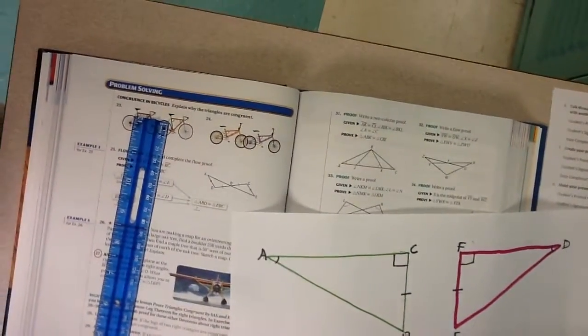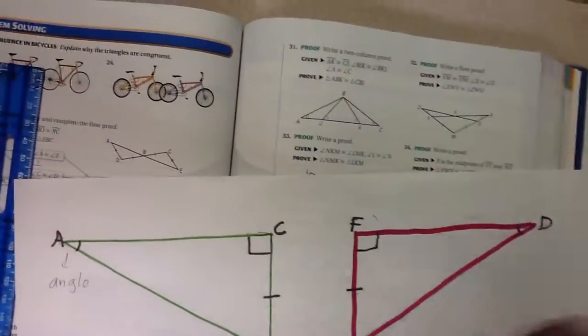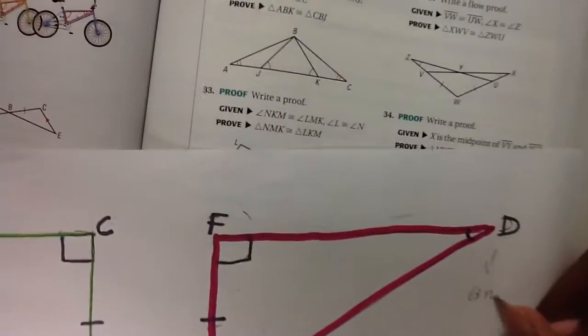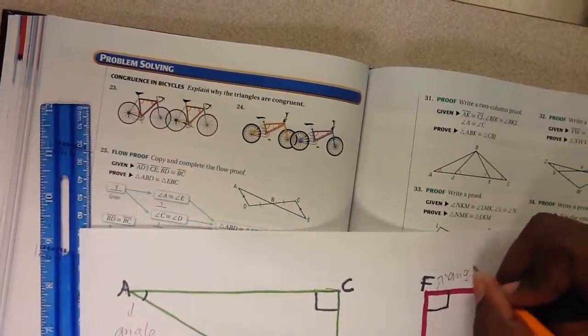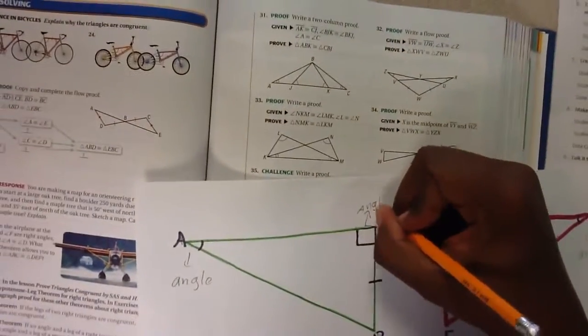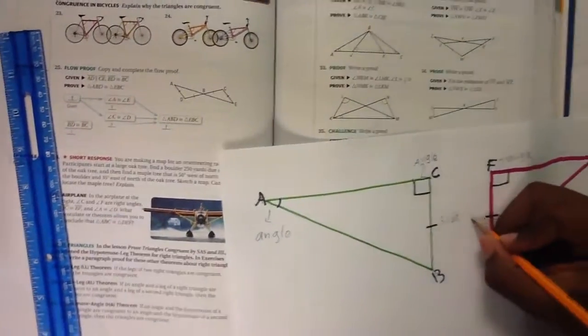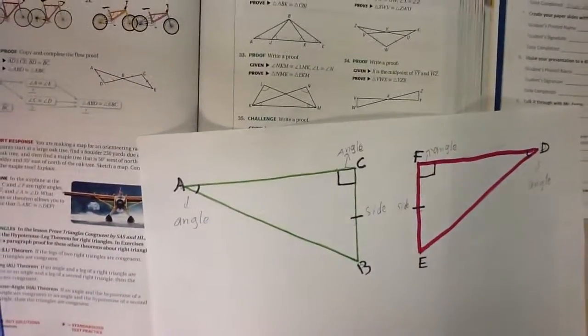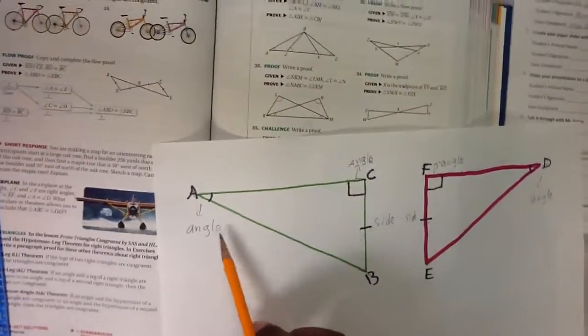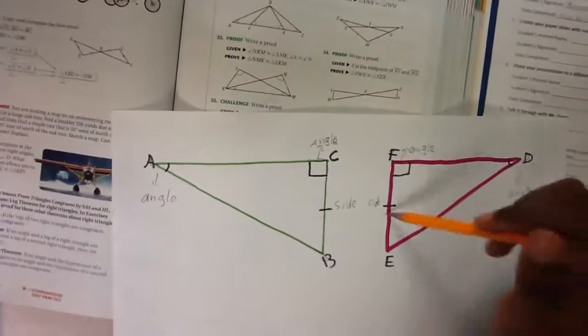So to conclude, we have one angle, and here we have another angle. This one is the right angle, and one side. To conclude, we have angle, angle, side.